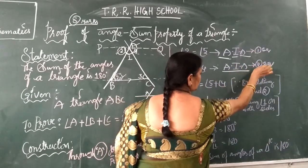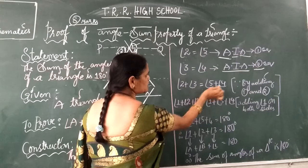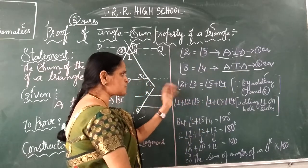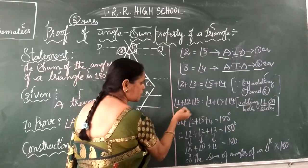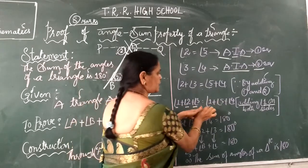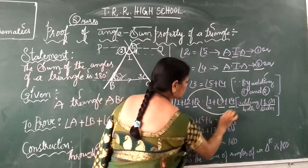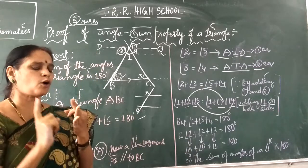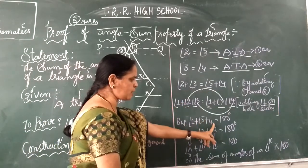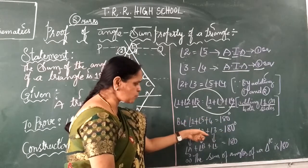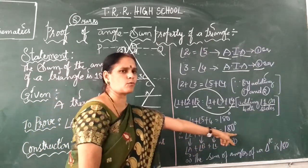You have to add angle 1 to both sides of the equation. So angle 2 plus angle 3 is equal to angle 5 plus angle 4. After getting this, add angle 1 to both sides. You will get angle 1 plus angle 2 plus angle 3 equals angle 1 plus angle 5 plus angle 4. Since angle 2 equals angle 5 and angle 3 equals angle 4, both being alternate interior angles, angle 1 plus angle 5 plus angle 4 equals 180 degrees.